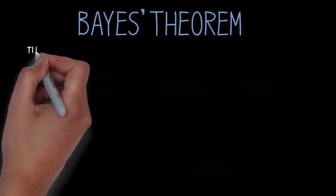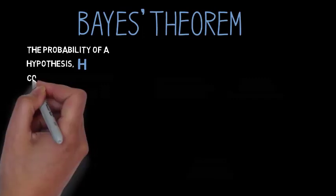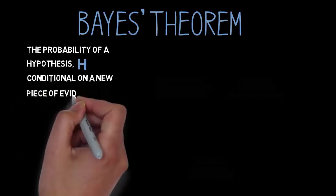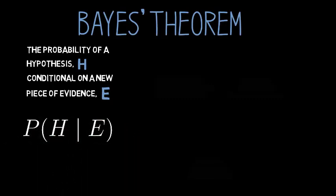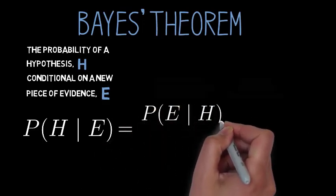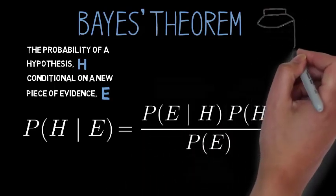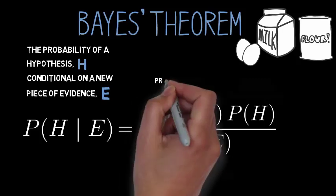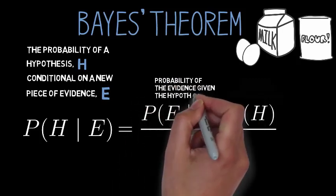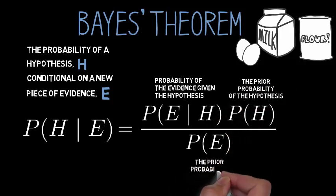So what does Bayes' theorem actually say? Remember our shorthand. Your probability in some hypothesis — let's call it h — conditional on some new piece of evidence — let's call it e — is written p of h given e. Here's what Bayes' theorem tells us: p of h given e equals p of e given h times p of h divided by p of e. In other words, it tells us the three ingredients that go into the probability of a hypothesis conditional on some evidence: the probability of the evidence conditional on the hypothesis, the prior probability of the hypothesis, and the prior probability of the evidence.